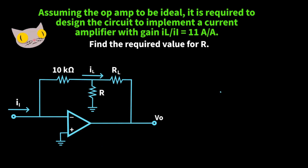Let's evaluate this op amp circuit. Assuming the op amp to be ideal, it is required to design the circuit to implement a current amplifier with a gain IL over II equal to 11.